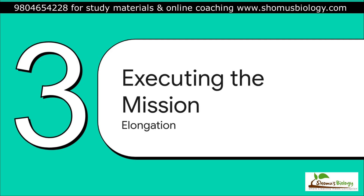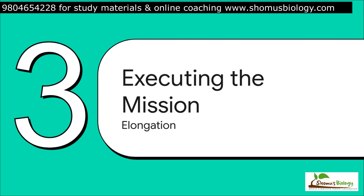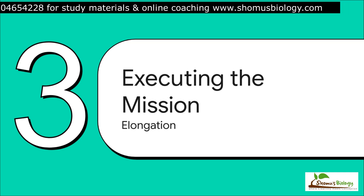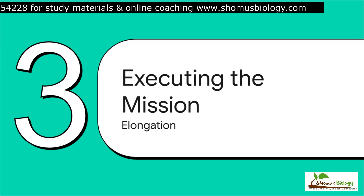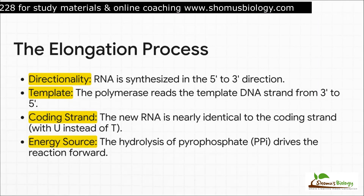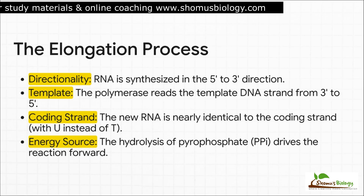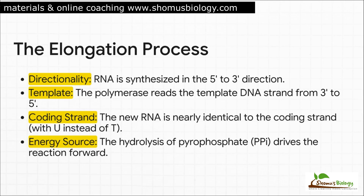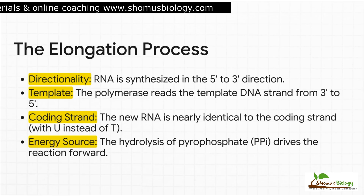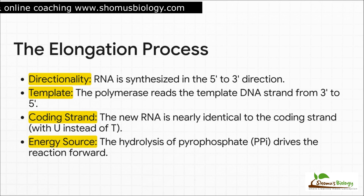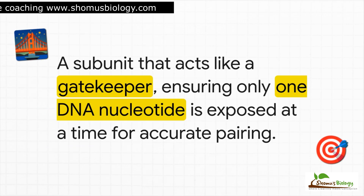The engine has started, the polymerase has cleared the promoter, and the mission is officially a go. Now we enter the elongation phase — this is where the real high-speed construction of the RNA molecule happens. Pay close attention to the directions here because it's a classic exam question. The new RNA chain is always built in the 5-prime to 3-prime direction, always. To do that, the polymerase has to read the template DNA strand in the opposite direction, from 3-prime to 5-prime. The new RNA ends up being an almost perfect copy of the coding strand — the one that wasn't read — with a U where the DNA had a T. The whole thing is powered by the energy released from breaking off two phosphate groups from each new incoming nucleotide.